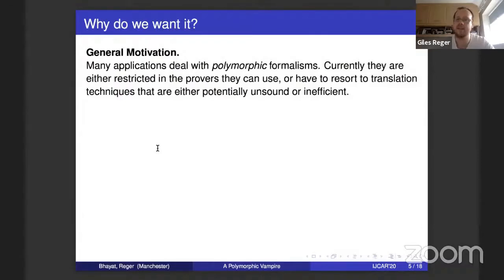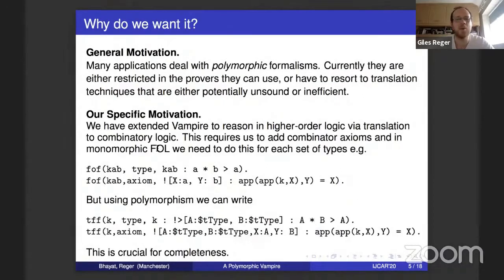Why do we want this extension to polymorphic first-order logic? The general motivation is that many applications already deal with polymorphic formalisms and have to do work to translate down to monomorphic first-order logic, and those translations can make it harder for the theorem prover. Specifically for Vampire, we've been extending it to higher-order logic by translation to combinators, and to do this we need to specify combinator axioms. Without polymorphism we need many instances; with polymorphism we can specify each axiom once, which is crucial for completeness.